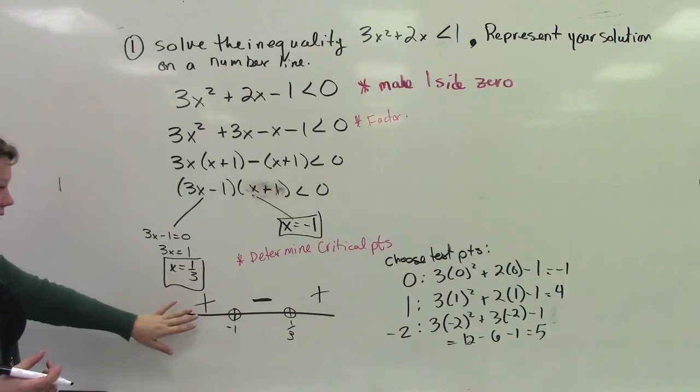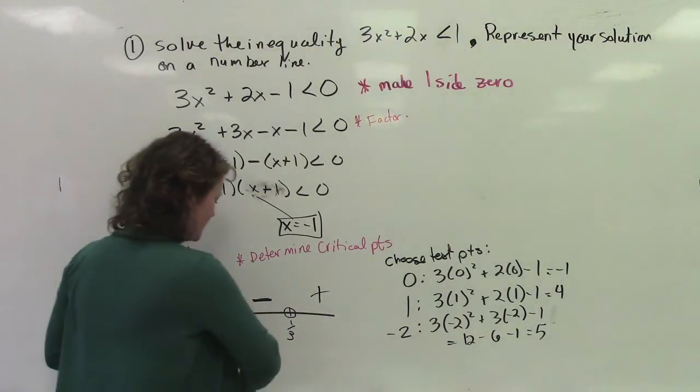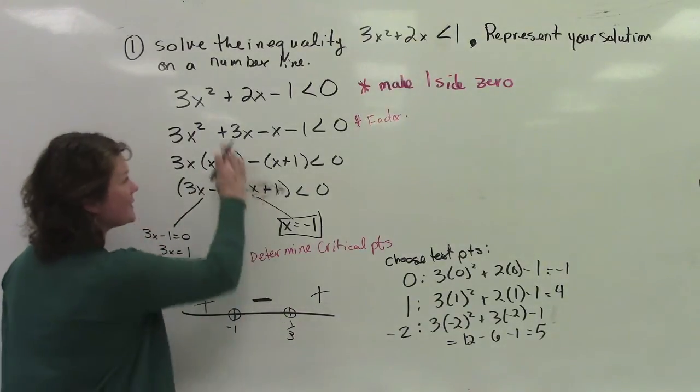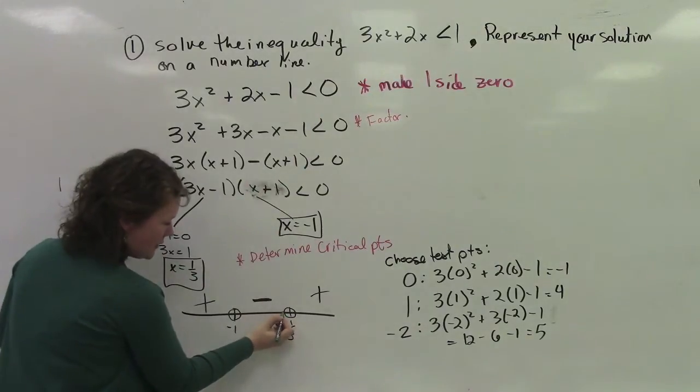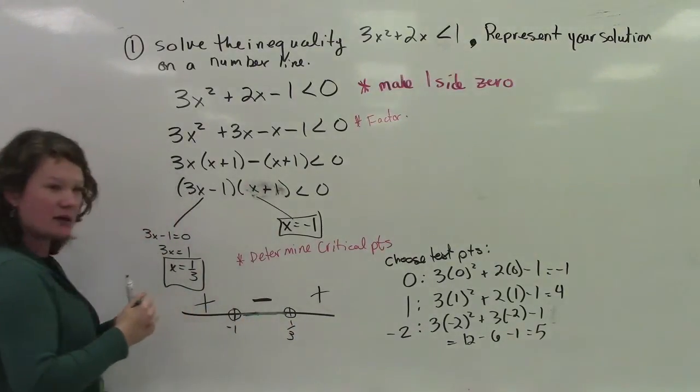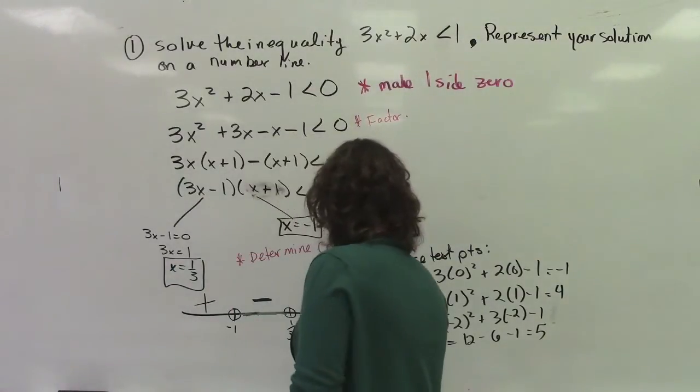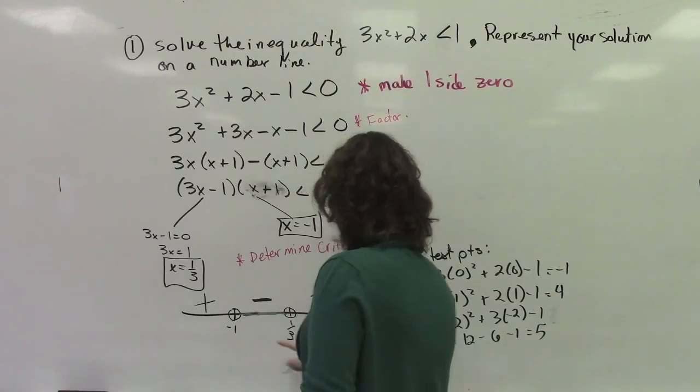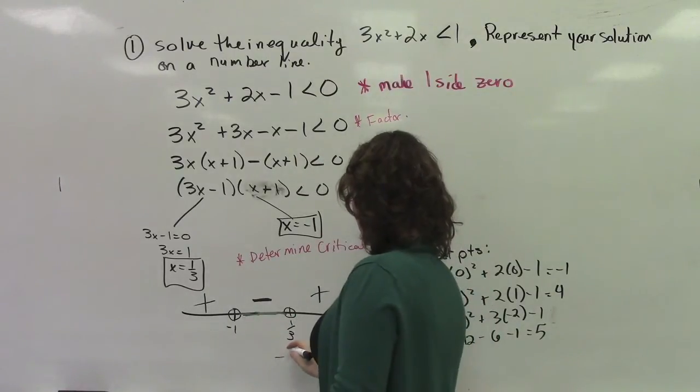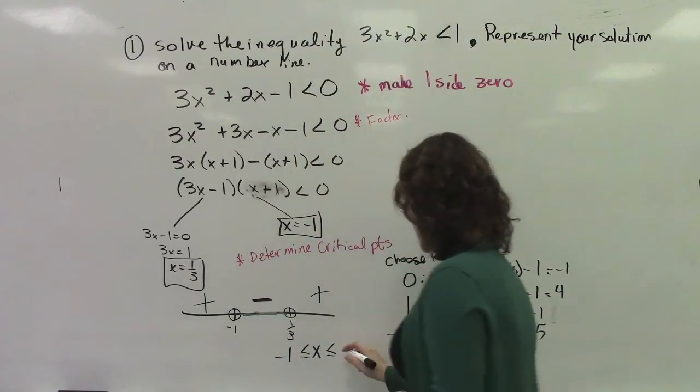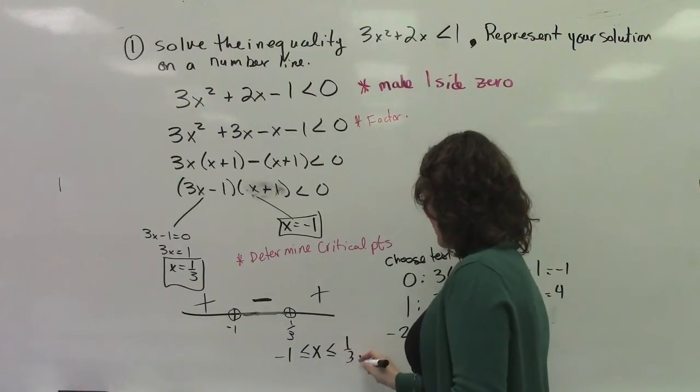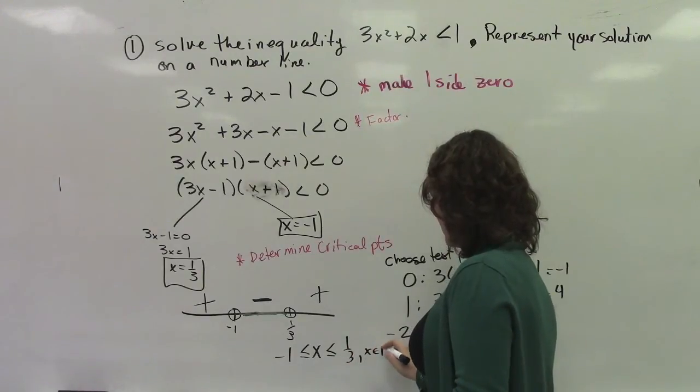So what I need to do now is I need to say, okay, so this right here is actually my solution because it's asking where it's less than 0. So where it's negative. So it's right here. If I wanted to express that in set notation, I would say x is in between negative 1 and 1 third, x is an element of the reals.